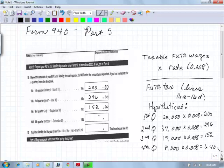And so, for the fourth quarter, taxable wages of only $8,000, so we're looking at a tax of $64.